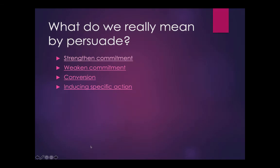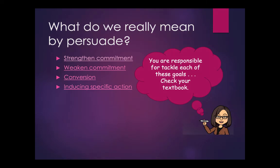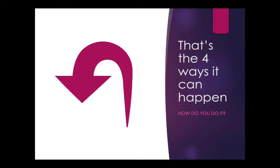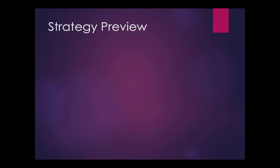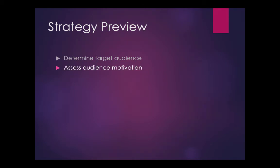So these are the four ways that we can persuade people — the four versions. In your textbook, there's specific information about how to tackle each of these goals, and you're responsible for that on your own. Now, how do you go about doing it? Let's take a look at a three-part strategy that is essentially the launching strategy for how to get started on a persuasive appeal. These three parts are identifying the target audience, understanding their motivation, and determining the specific purpose. Let's get started with target audience.